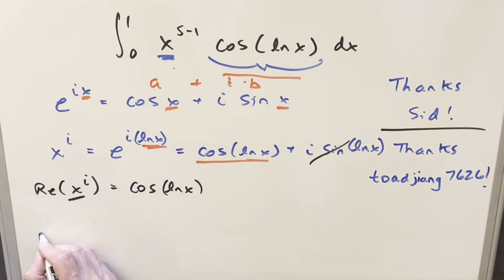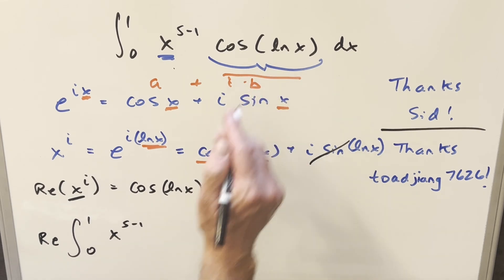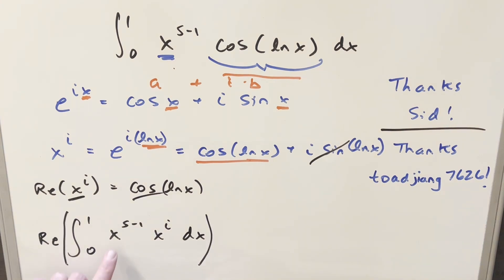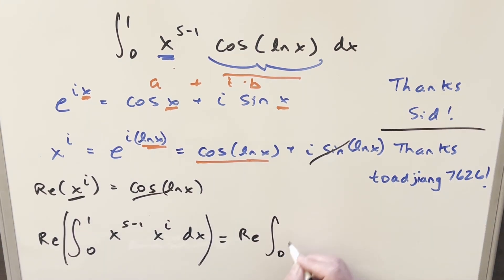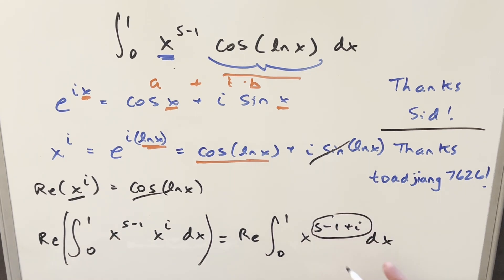When we do this, let's take the real part of the whole integral. We have x to the s minus 1, and then for our cosine ln x we just use x to the i dx. Now with the same base, we can combine these into one term — the integral from 0 to 1 of x to the s minus 1 plus i. This is all a constant value even with the i, so we can just use the power rule.